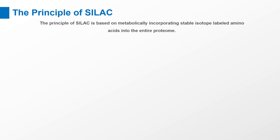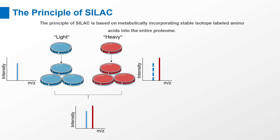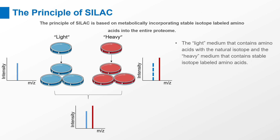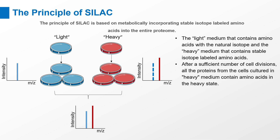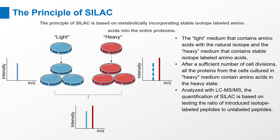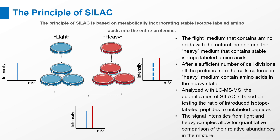The principle of SILAC is based on metabolically incorporating stable isotope labeled amino acids into the entire proteome. In SILAC, two populations of cells are grown in two different culture media: the light medium that contains amino acids with the natural isotope, and the heavy medium that contains stable isotope labeled amino acids. After a sufficient number of cell divisions, all the proteins from the cells cultured in heavy medium contain amino acids in the heavy state. Analyzed with liquid chromatography with tandem mass spectrometry, the quantification of SILAC is based on testing the ratio of introduced isotope labeled peptides to unlabeled peptides. The signal intensities from light and heavy samples allow for quantitative comparison of their relative abundances in the mixture.